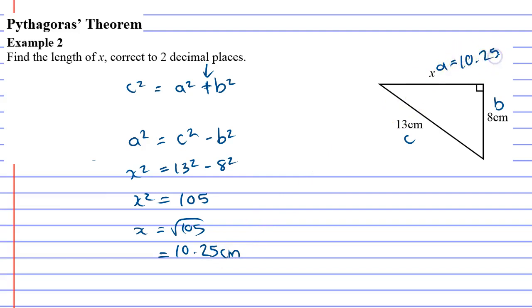And it's good to just have a quick look and see if it makes sense. What you're really looking for is to make sure that this side is less than 13. If it ends up being more than 13, you know you're wrong, because the hypotenuse always has to be the longest side. So that's done.